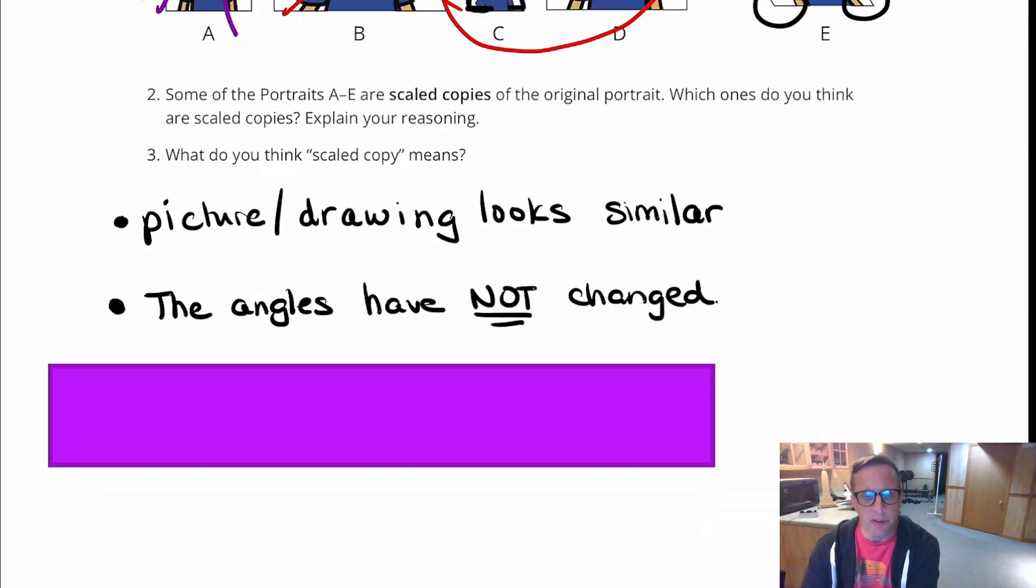We've got all the same angles, and if something is a scale drawing, or a scale picture of something, the angles should never change. The angles are not going to get bigger, they're not going to get smaller, the angles will remain the same. The dimensions of it, however, can change. It can get taller, it can get wider, you can have all types of enlargements and reductions, but angles are going to be the one thing that are going to remain the same, no matter what.